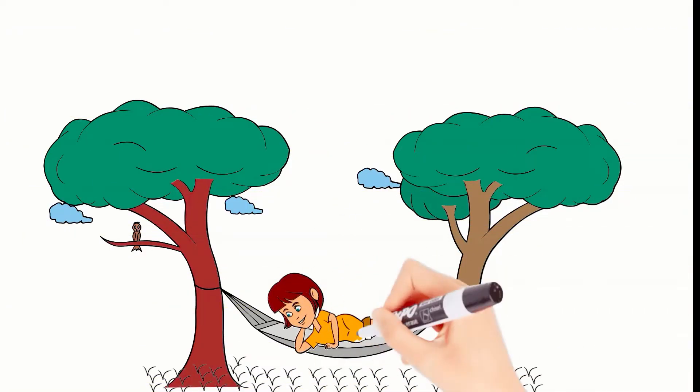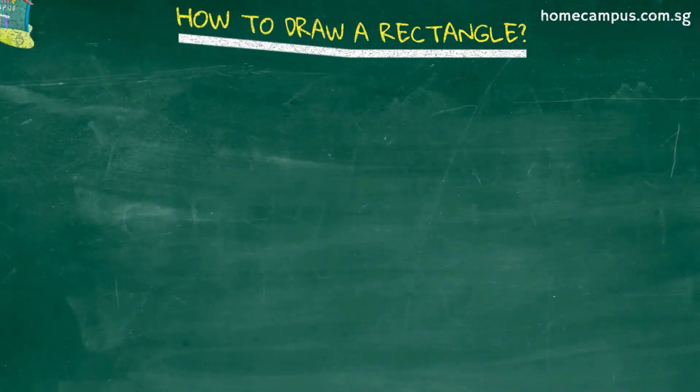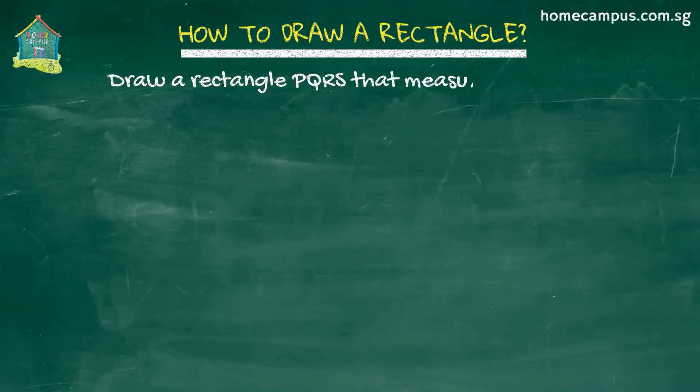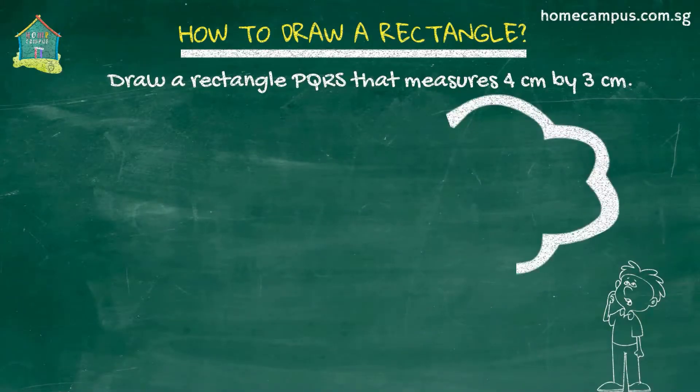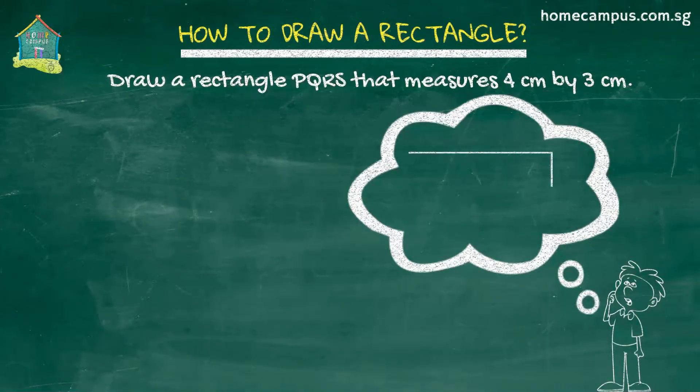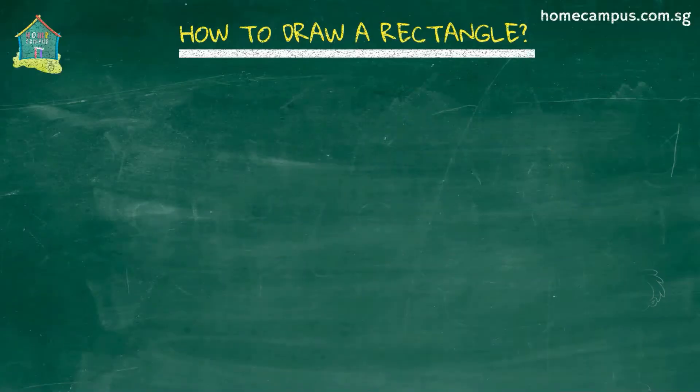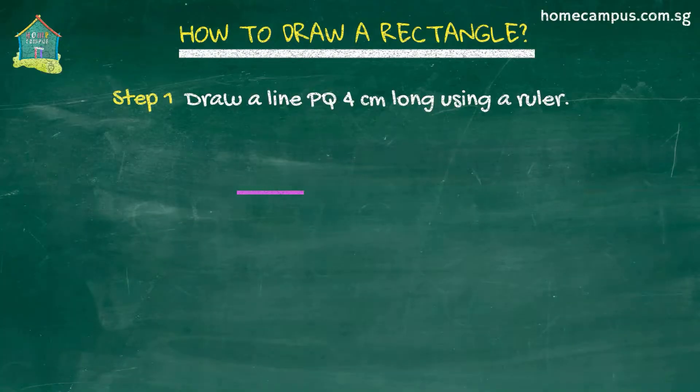Alright, now let's dive straight into this tutorial. So let's draw a rectangle PQRS that measures 4cm by 3cm. For that, first we draw a 4cm long straight line using a ruler. We label it PQ.